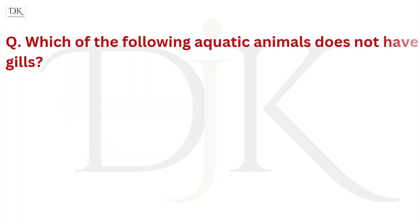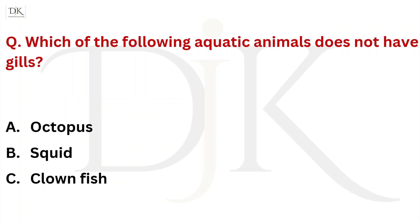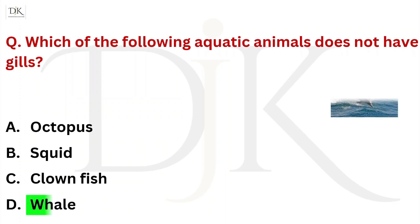Which of the following aquatic animals does not have gills? Right answer is whale.